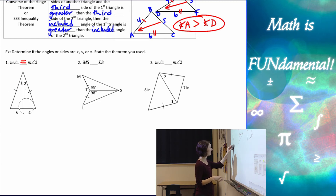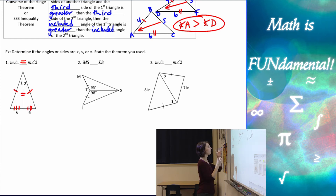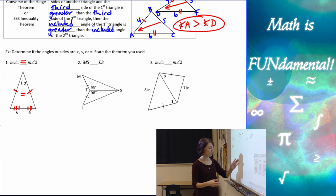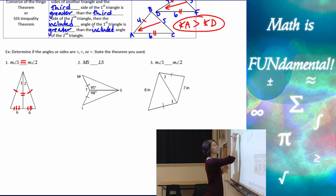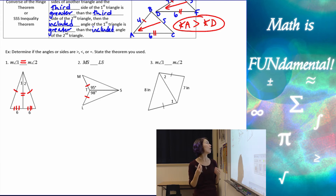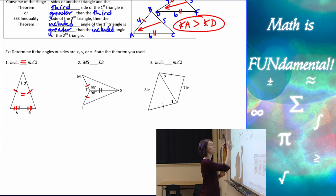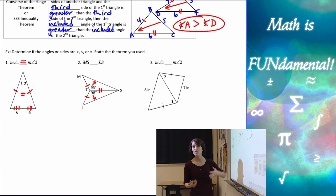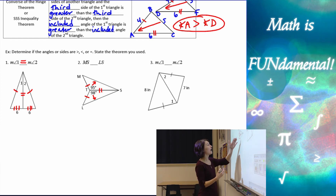In the second example, we're looking at the measure of sides MS and LS. We're given that MT is congruent to TL, and TS is congruent to itself. So we can look at the included angle: because 98 degrees is greater than 95 degrees, then LS has to be greater than MS, or MS is less than LS.